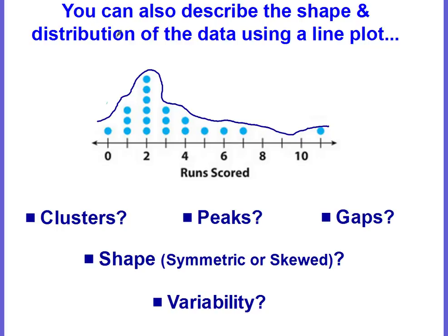What about the variability? Well, we're talking about runs scored and we're going from zero runs to eleven runs. For a baseball game, eleven is a pretty high-scoring game. Most baseball games I've watched, a team only scores like three to five. Every once in a while, like a seven — not a lot of games do I see where the score is over ten. Variability is really going to depend on the subject matter you're talking about.